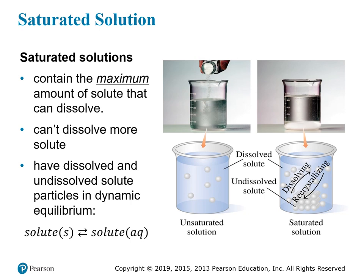If you have the maximum amount of solute, or try to add more than the maximum, you get a saturated solution. The solubility maximum is just that — the maximum you can reach. Once you've hit that level, you can't dissolve any more solute. If you add more solute, it just settles to the bottom as a solid. You can see solid salt at the bottom of the beaker because the solubility limit has been exceeded; the liquid on top stays at the concentration defined by the solubility limit.